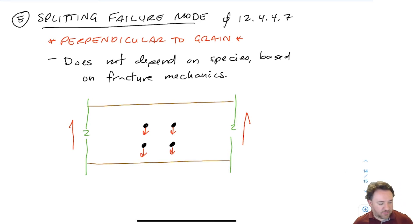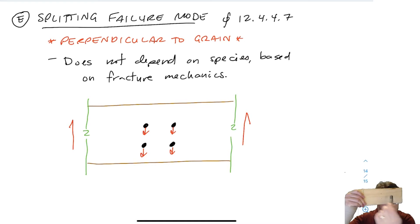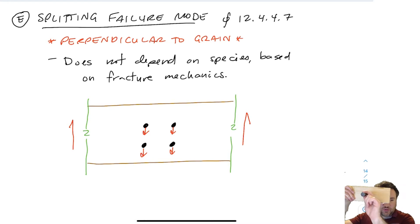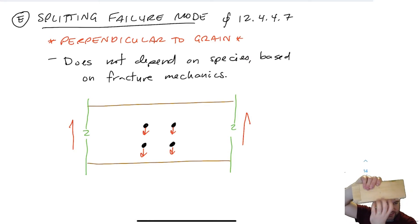Here we have a piece of wood, looking at it on its side, with bolts inside. Instead of the bolt wanting to tear out the side, or cause group tear out, net tension, or even bolt yielding, we're looking at what happens if the bolt wants to move perpendicular to grain. So I'm pulling down, basically grabbing this wood and pulling it down from a certain height.